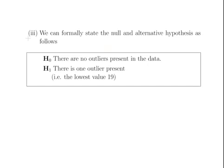What we are going to do here is first off formally state the null and alternative hypothesis for the Dixon Q-Test. The null is always something like this for outlier tests: There are no outliers present in the data. The alternative hypothesis is that there is one outlier present in the data, which is to say the lowest value 19.